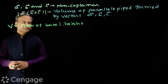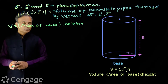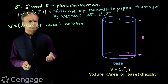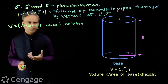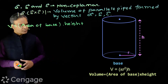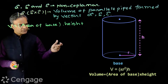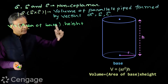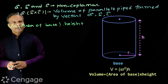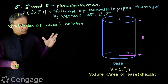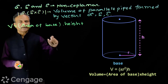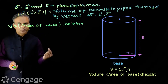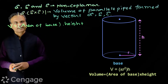We can also consider a cylinder, which falls in this category as a prism-type figure. Suppose the radius of the base is R and the height is H. Then the volume will be π R squared times H, where π R squared is the area of the base and H is the height.